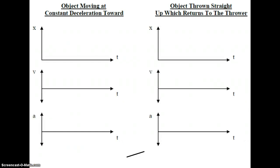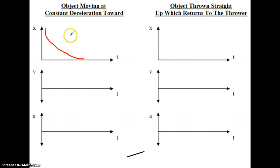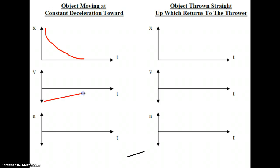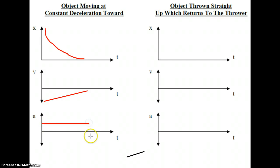For an object moving at constant deceleration toward: toward means the X numbers are getting less, slowing down means the slopes of our tangents are getting less, resulting in a curve sloping toward zero. The VT graph takes the shape of below the axis with decreasing V numbers getting closer to zero. The slope of this line is positive, giving a positive acceleration — a horizontal line above the time axis showing constant acceleration.